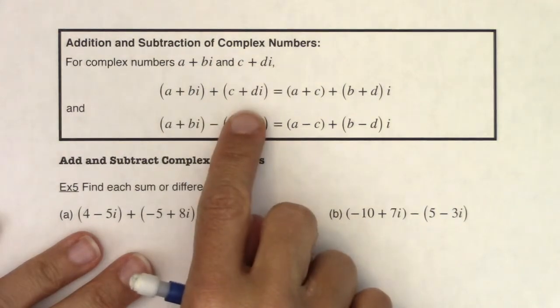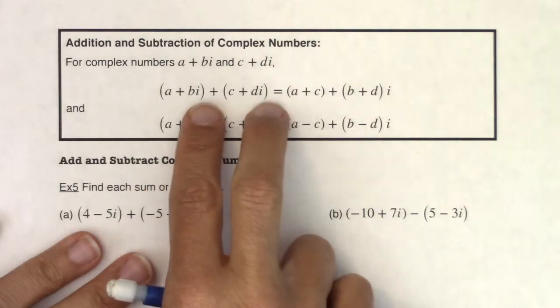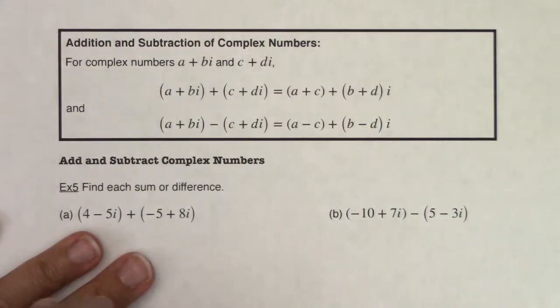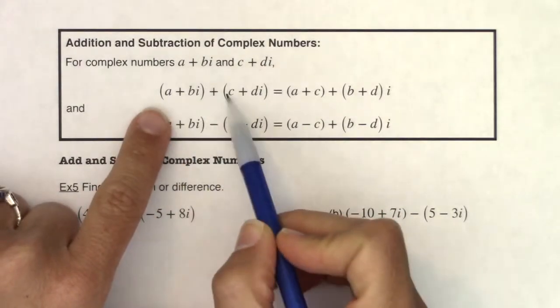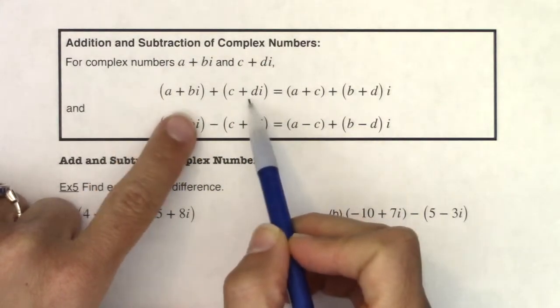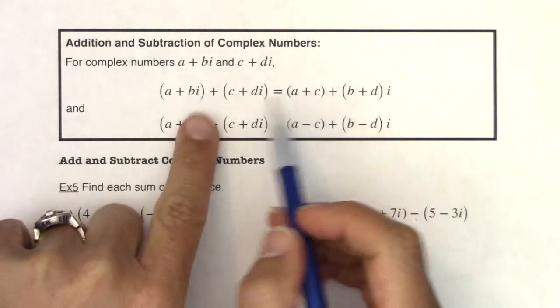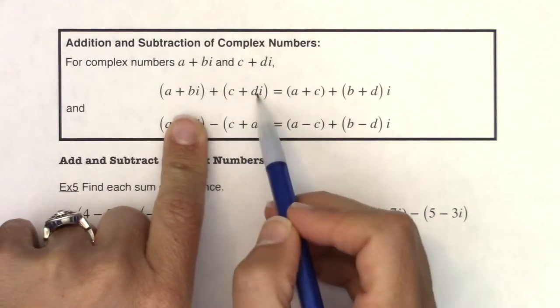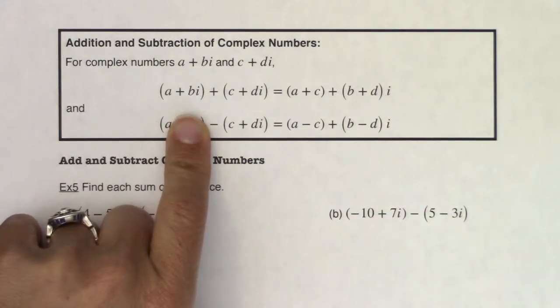the mechanics of this are that we are going to add the real parts together and add the imaginary parts together. So we're going to add like terms. If I've got a and c as the real parts of my two complex numbers, I'm going to add those together, those will be like terms. And if I have bi plus di, I'm going to add b plus d, and that will be the coefficient on my i term.